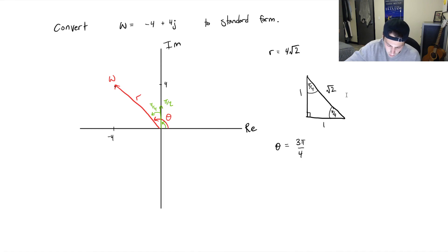And then finally, you can write it as w equals the modulus 4 root 2 times cosine of 3π over 4 plus j times sine of 3π over 4. And that's really all there is to it.